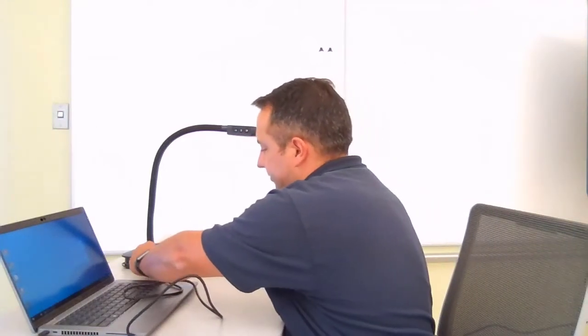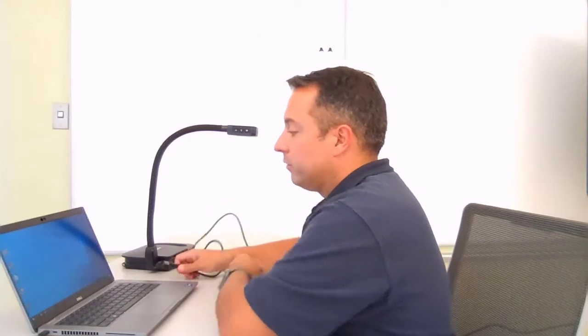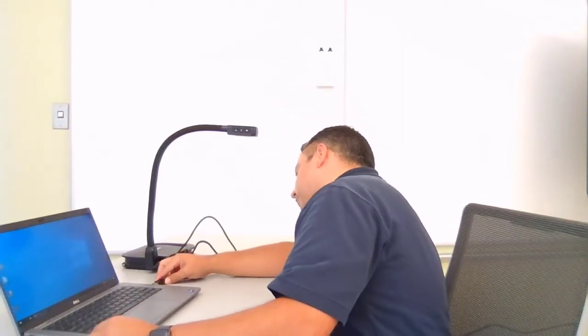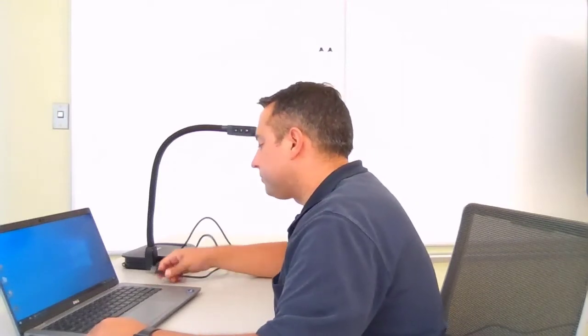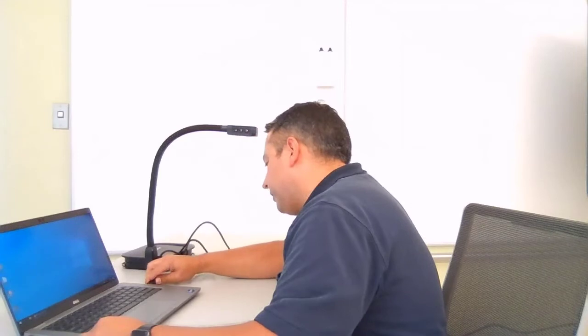You're going to plug the funny looking end into the back of the side of the document camera, which is right here, and you're going to plug the other end into your computer. So we're going to start off by me demonstrating how you're going to project this to your Brightlink projector.